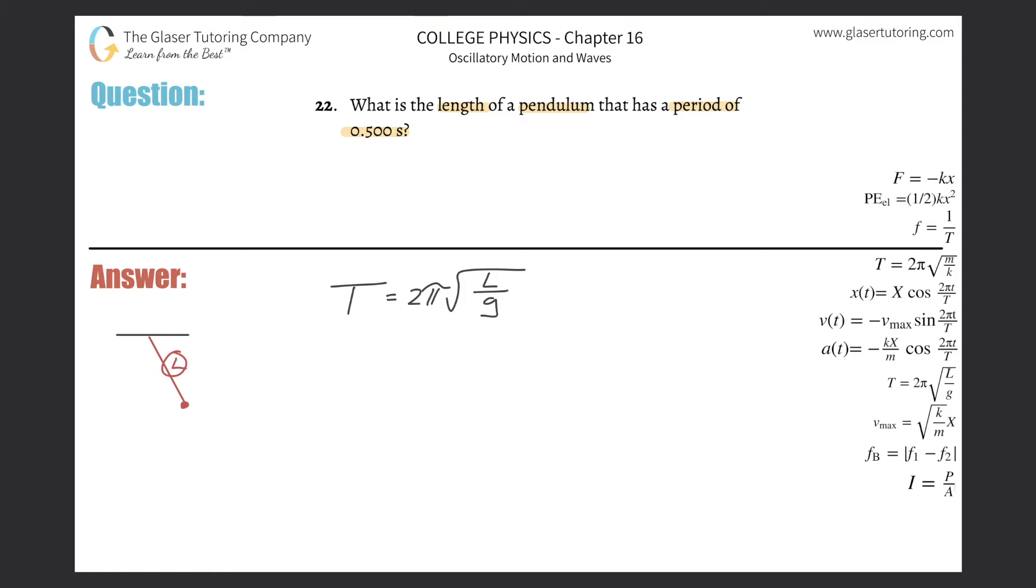So it wants to find the length. So why don't we solve this thing for L? You've got to divide out 2π. So the period divided by 2π equals then the square root of L over g. Notice how the formula is very similar to simple harmonic motion, it's just a little different. So we've got to square both sides, right?